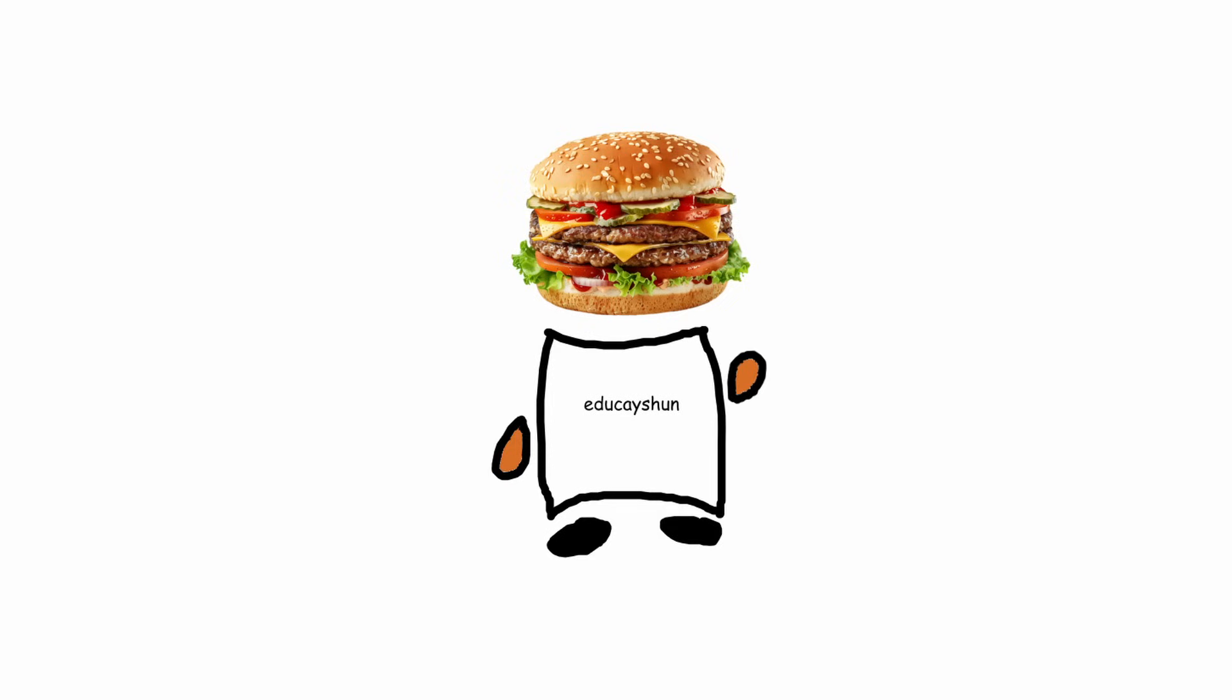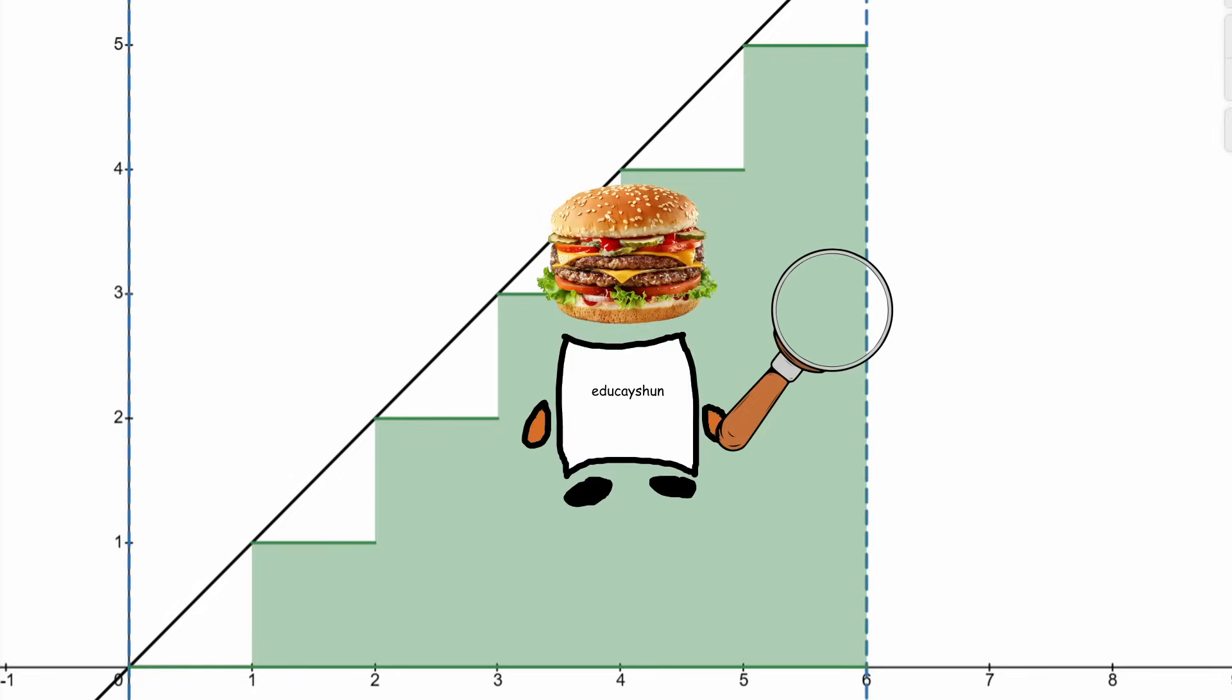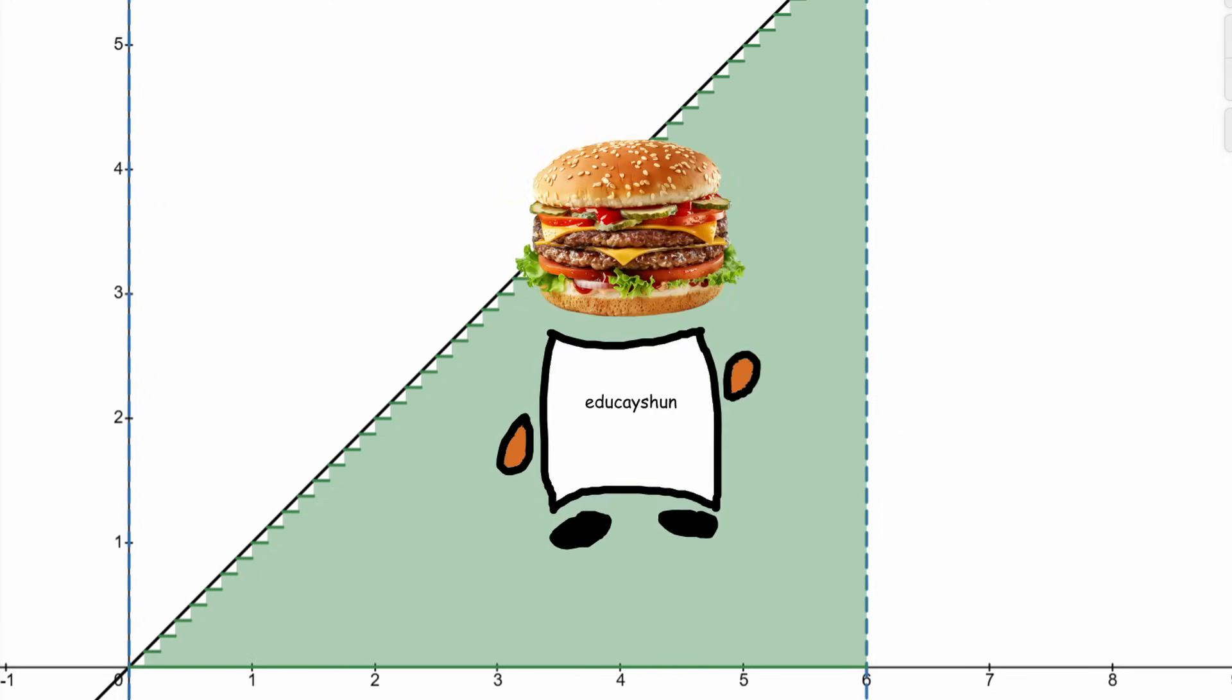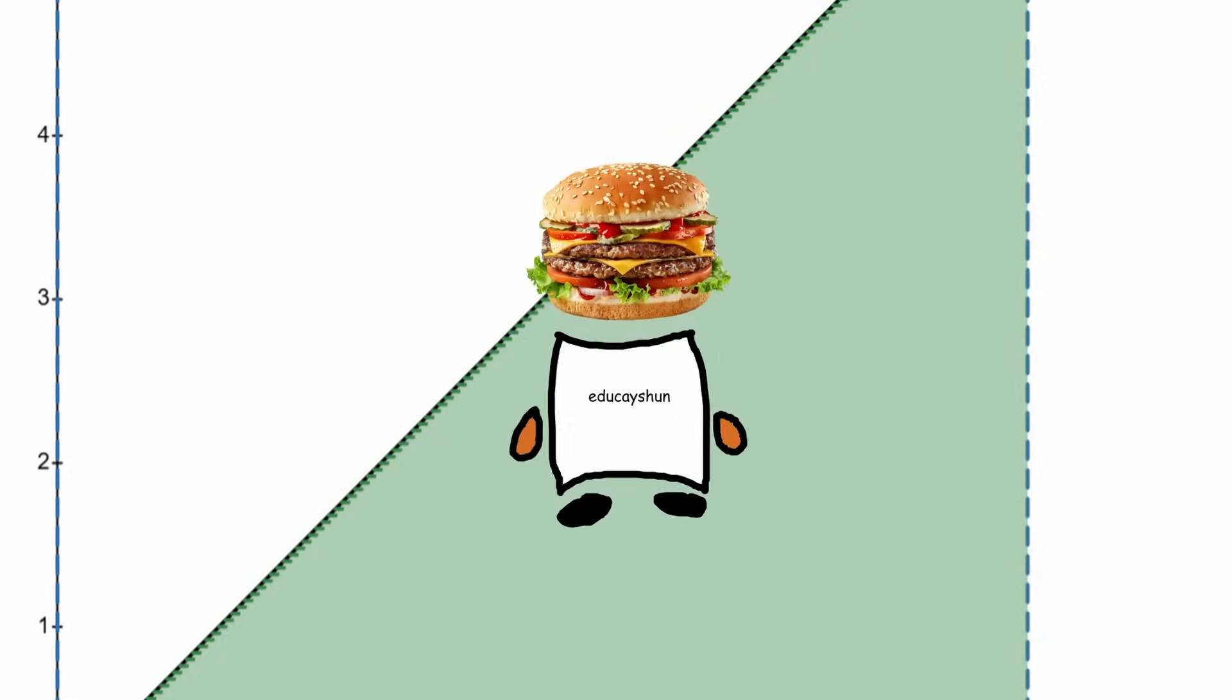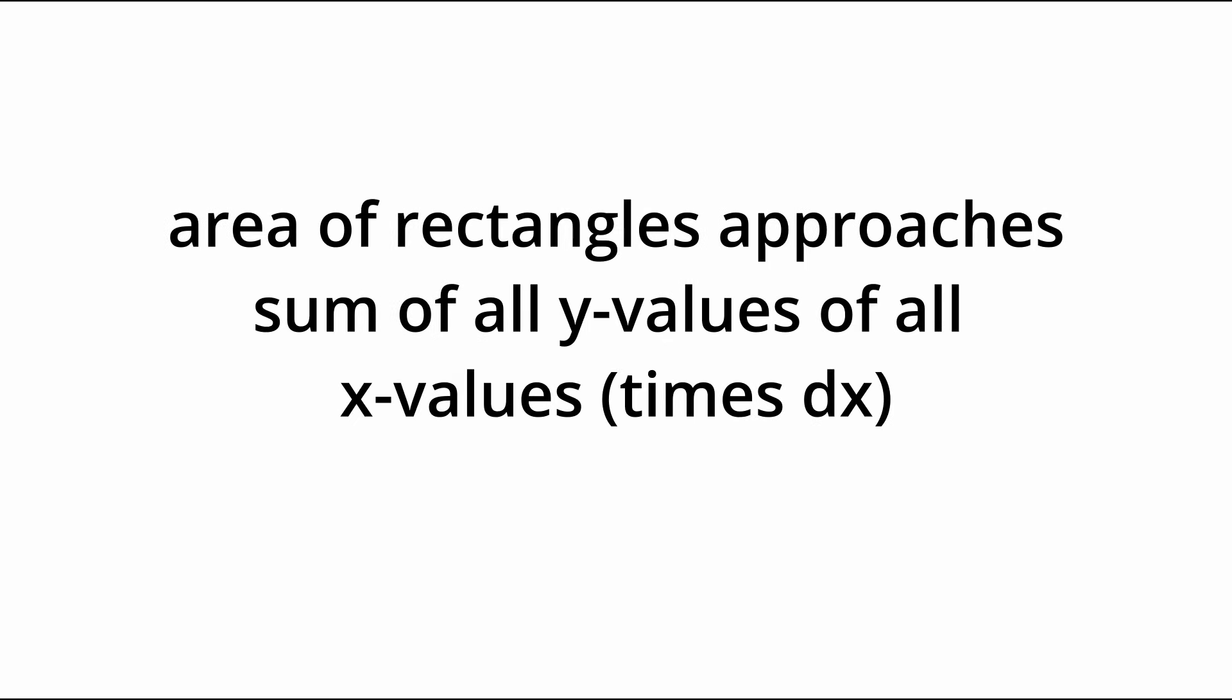Let's try zooming these rectangles into higher resolution. And we'll keep taking the sum every single time. Eventually, these rectangles get so thin where they're basically just straight lines that go up from the x-axis to the line itself. And the sum becomes very close to the exact sum of all the values of the function.